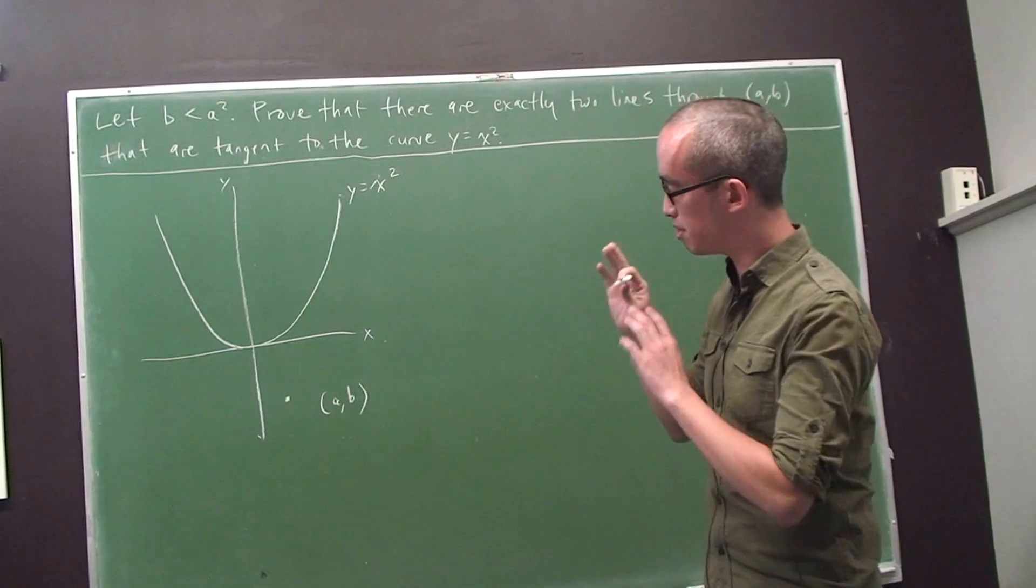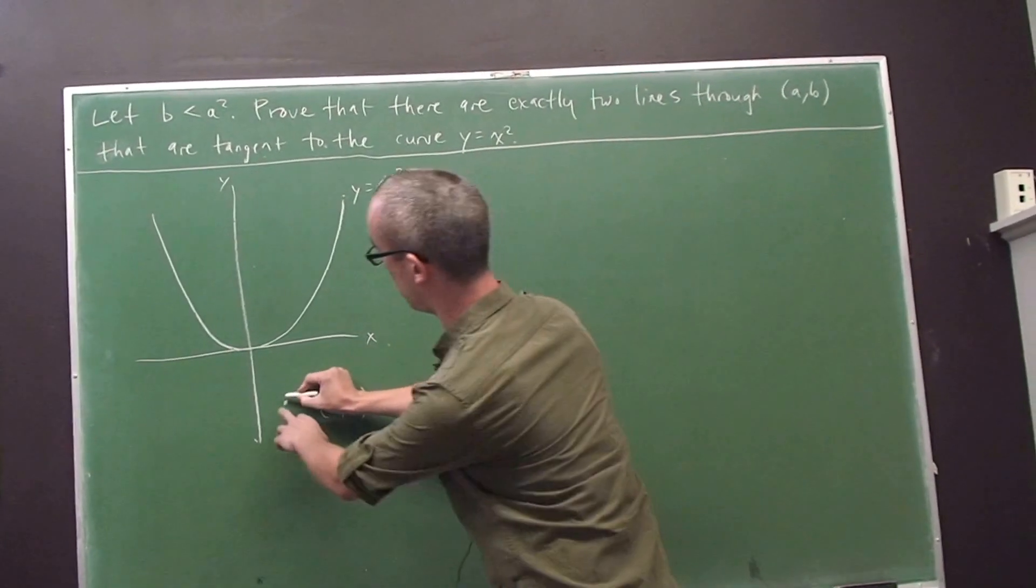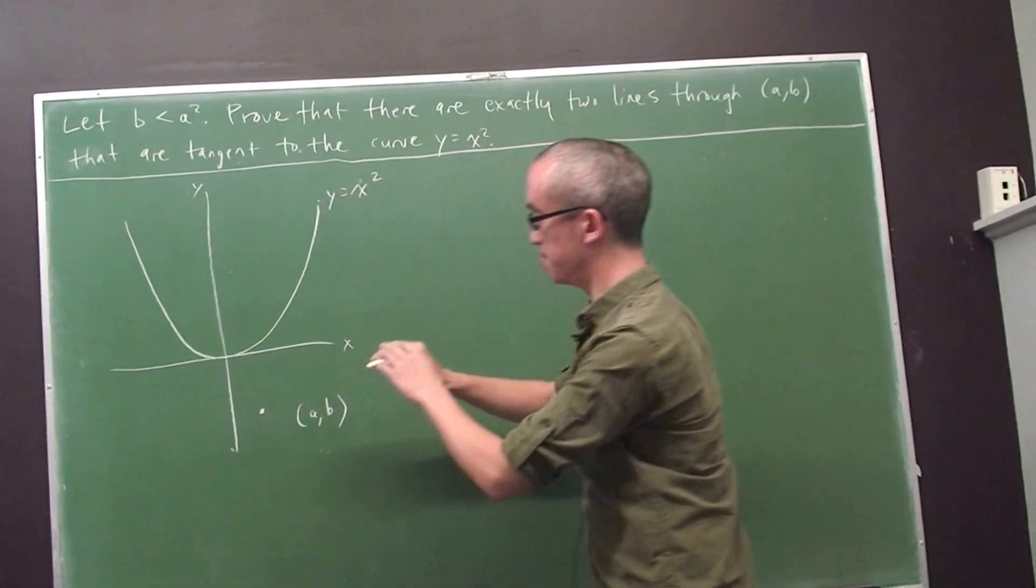Now it's certainly plausible that there are two lines tangent to the parabola through this point. One line that looks like that and maybe one line that looks like that. But we have to prove it.